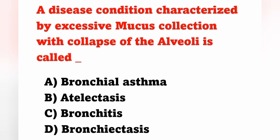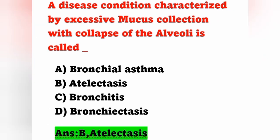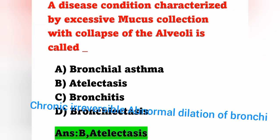Next question: a disease condition characterized by excessive mucus collection with collapse of the alveoli is called — option A bronchial asthma, option B atelectasis, option C bronchitis, option D bronchiectasis. The answer is atelectasis, option B. Bronchial asthma is a bronchial airway disorder with irreversible bronchial spasm; bronchitis means inflammation of the bronchi; bronchiectasis means chronic irreversible abnormal condition of the bronchi.